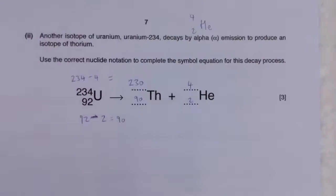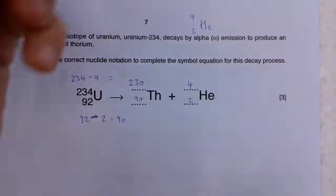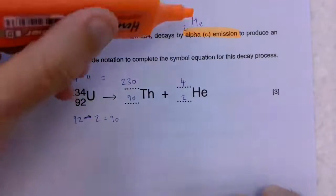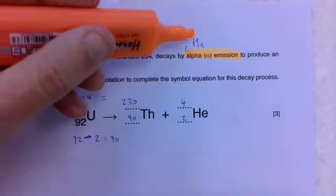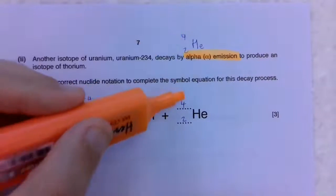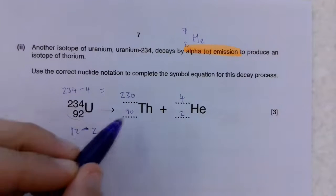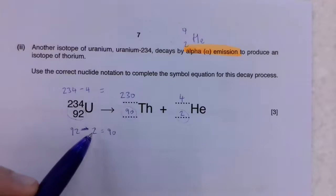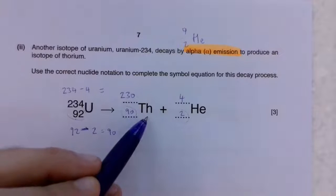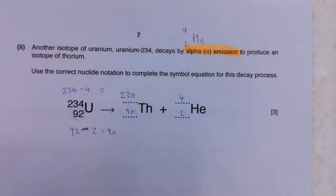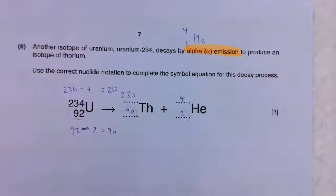On the back. We've got alpha emission, and we've got a balancing equation. Well, we know that alpha is a helium nucleus, 4, 2 on the bottom, and then He. So that's the first numbers I would get writing down there, 4 and 2. We're told uranium has 92 on the bottom. Well, these numbers on the bottom need to balance, which means 92 take away 2 is going to give me 90 there. This is thorium. On the top, same idea, 234 and 4. 234 take away 4 gives me 230.